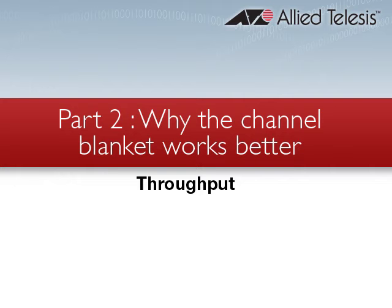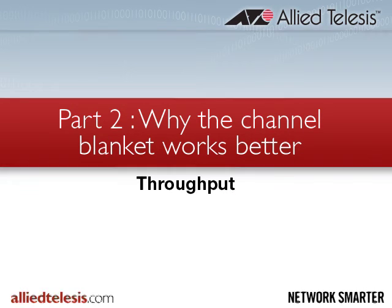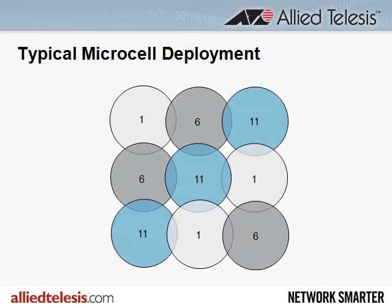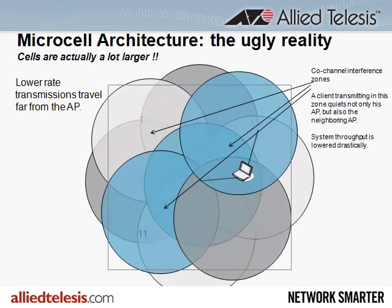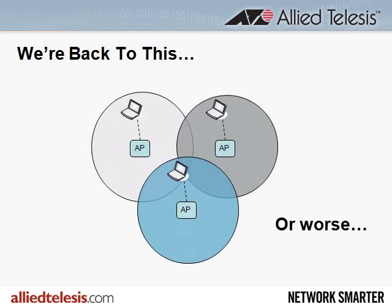In the previous video, 'The Problems with Microcell Part One,' we discussed a typical microcell deployment with nine APs. We saw how co-channel interference drastically reduces the actual throughput to the extent that it's the same as if we had deployed only three cells, not nine. So we were left with three channels of capacity, or even less, taking into account contention losses.